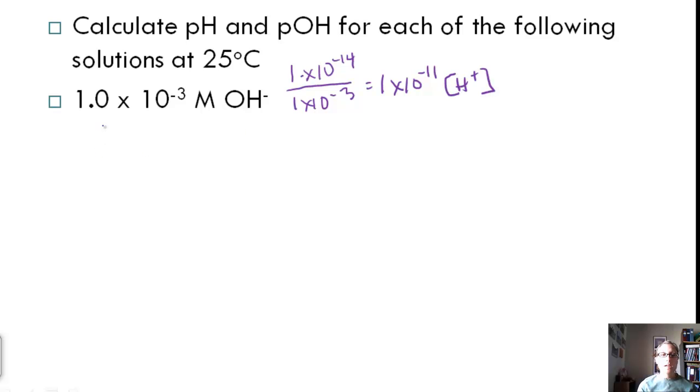We know that pH is equal to negative log of H plus, which in this case is 1 times 10 to the negative 11. And so this means that the pH is equal to 11. pOH is equal to the negative log of the OH concentration, and in this case that's 1 times 10 to the negative 3. And so pOH equals 3.